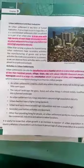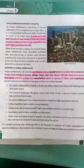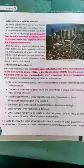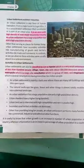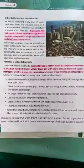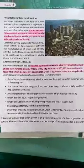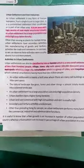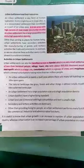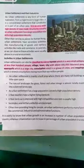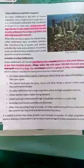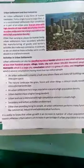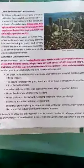Assalamu alaikum students. Our today's topic is unit number six, chapter number three from the book of geography: urban settlement and their industries. First of all, I will tell you what an urban settlement is. It is an area with high density of man-made structures. Usually an urban settlement has a large population size and a high population density.